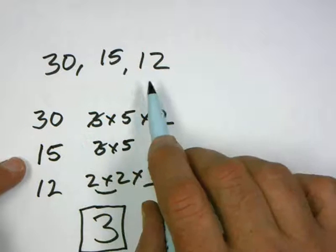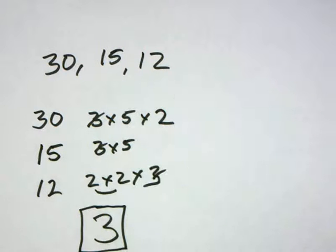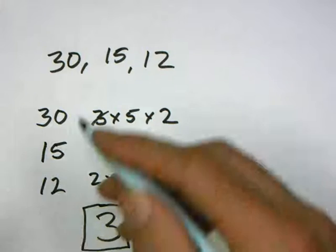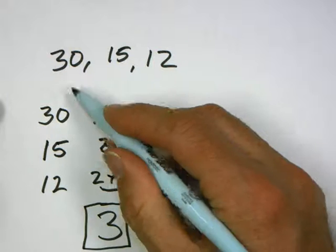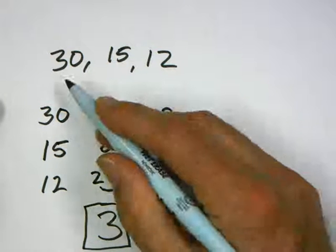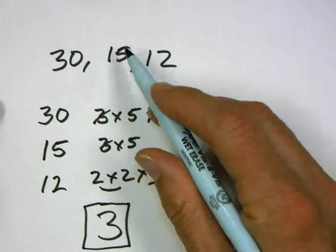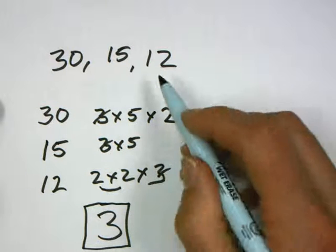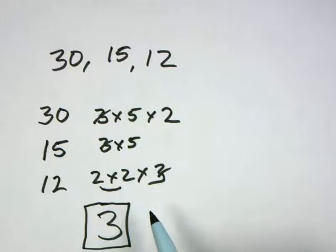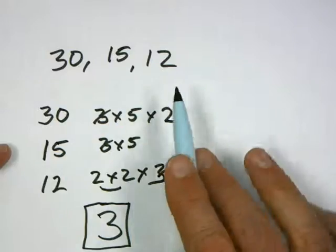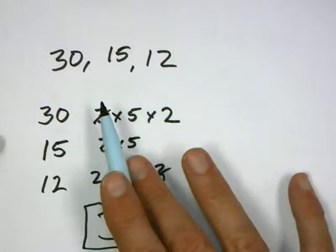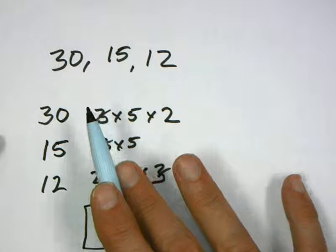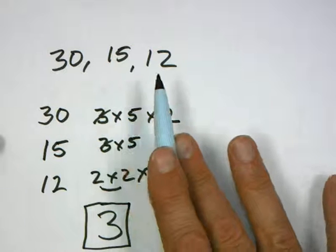Now, what I should do is check it. I can grab a calculator. 30 times 10 is 3, so 3 is a factor of 30. 30 times 5 is 15, and 30 times 4 is 12. And is there a larger one? Well, how about 6? Well, 6 can go into 30, but not 15. It does go into 12. And I can experiment a little bit with this, but it works.